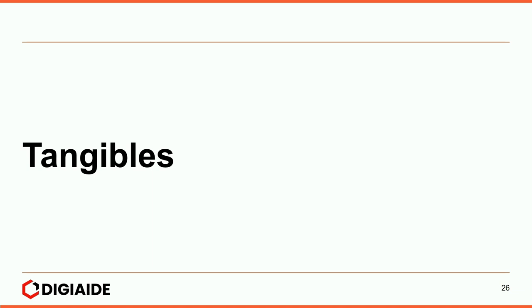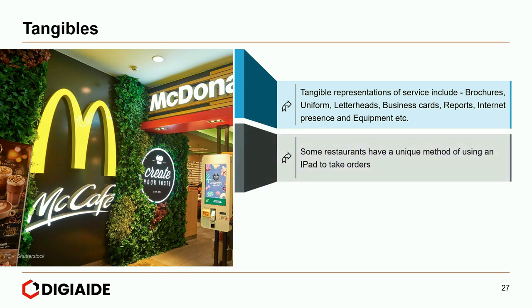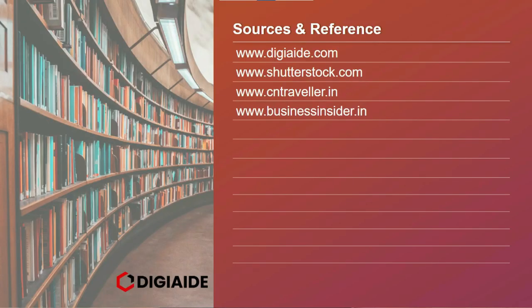And finally, the other area of physical evidence — Tangibles. Tangibles' representation of service include brochures, uniforms, letterheads, business cards, reports, internet presence and equipment. Some restaurants have a unique method of using an iPad to take orders — thus the iPad is a tangibility factor. Additionally, an insurance policy given by insurance companies and uniforms given by hospitals fall under the purview of tangibles. So that's it folks, this brings an end to the topic on physical evidence.